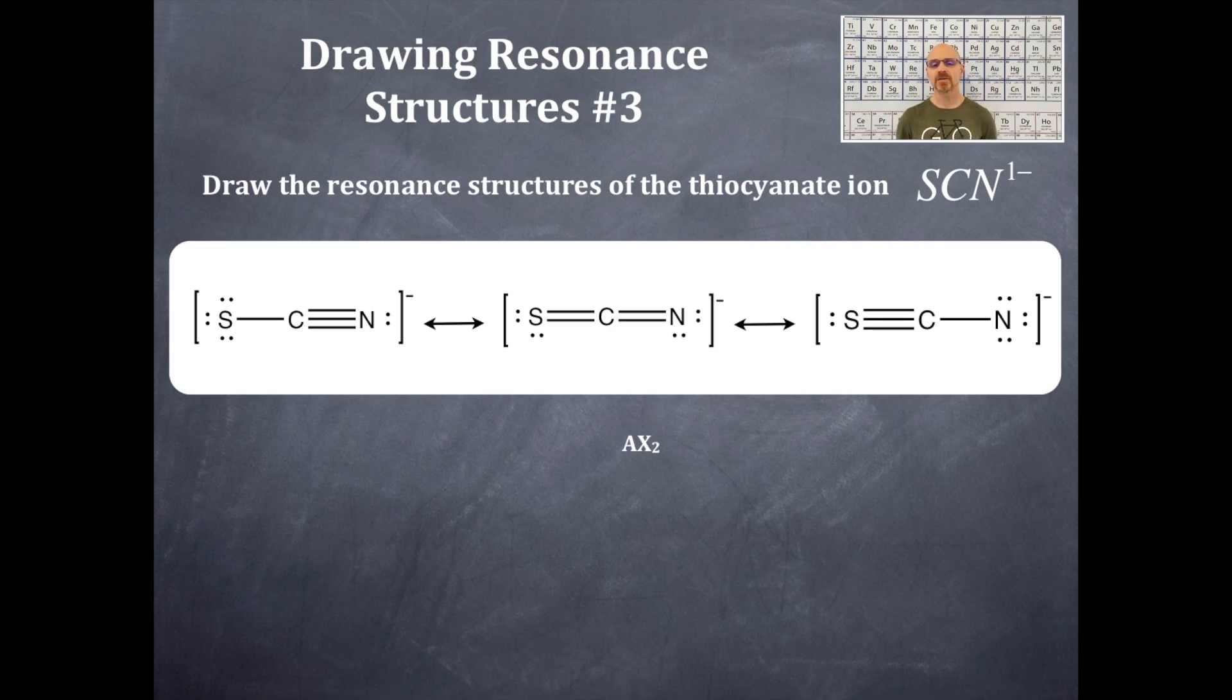All of them follow the AX2 structure. That is to get the geometry of this, the molecular shape, which is two bonding and no non-bonding regions on the central element. It doesn't matter which resonance structure you follow, you're going to get that same information. From that, you should figure out that this molecule is linear, with a bond angle of 180 degrees.